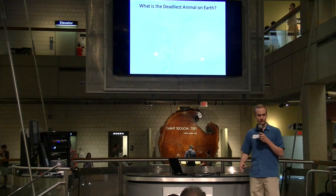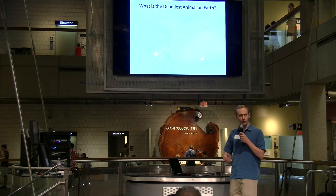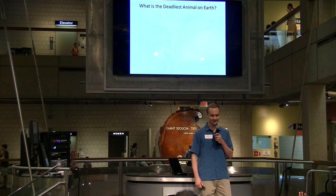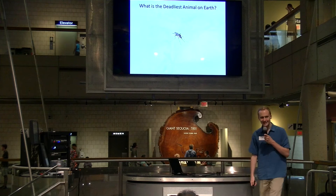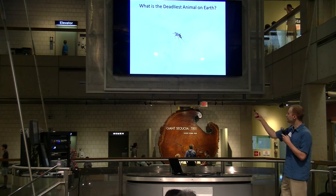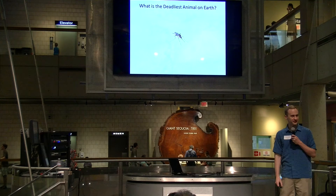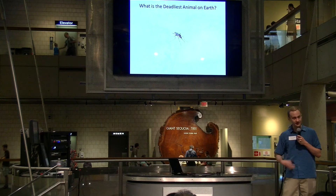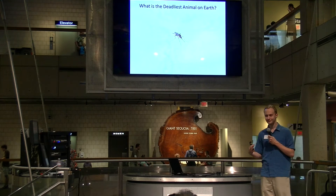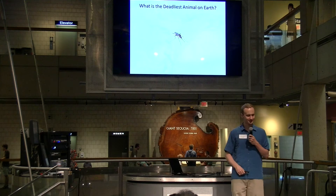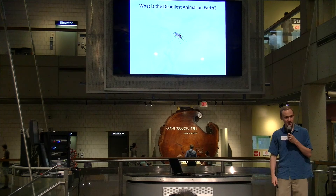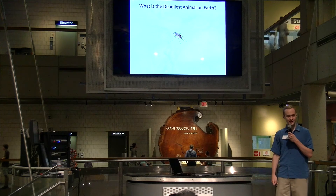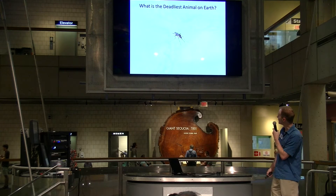First, a question: what is the deadliest animal on earth? The mosquito. The mosquito is the deadliest animal on earth because it carries diseases that kill more people than any other animal — far more than tigers, rampaging elephants, wildebeest, or anything else.